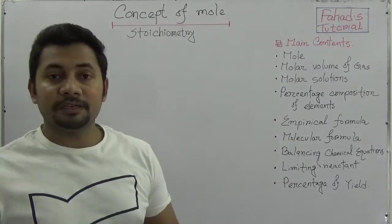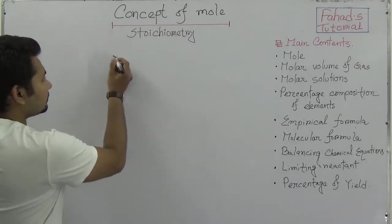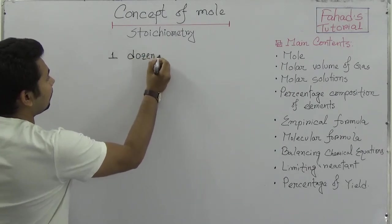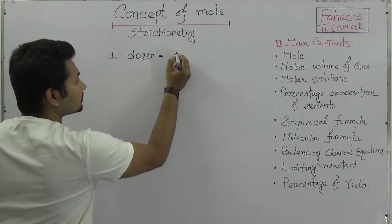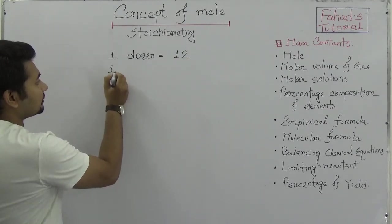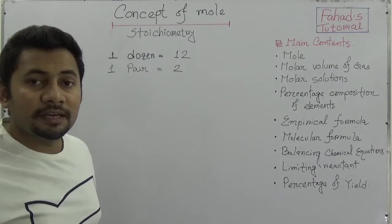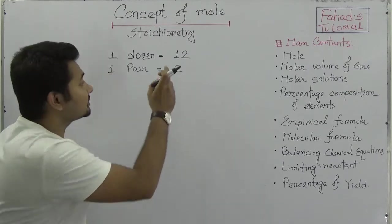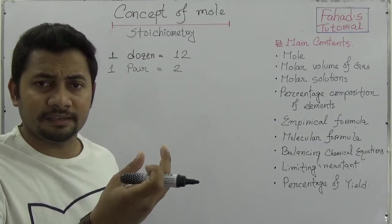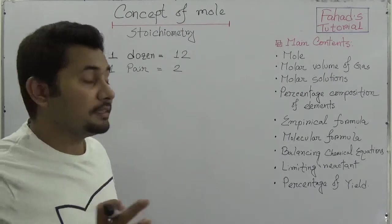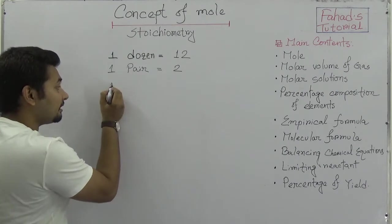Every single topic is important. First, you need to know what a mole is. Suppose if I say 'one dozen of jalebis' — what do you understand by the word 'one dozen'? We understand that one dozen means twelve. Or if we say 'one pair of electrons', we think that is two electrons. Or one dozen of bananas means twelve bananas. So the word 'dozen' is used to determine the number of anything as twelve. Similarly, one hundred means 100, one thousand means 1000.